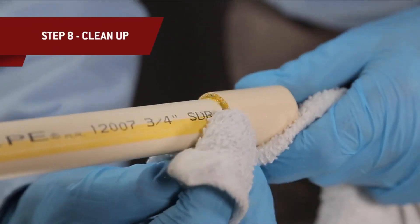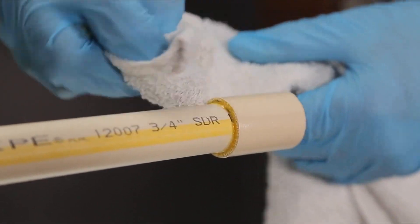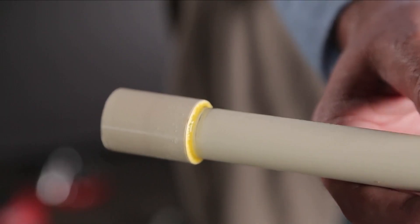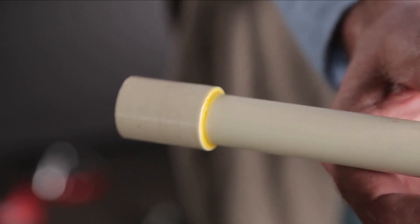Remove any excess cement with a rag. You want to see a continuous bead of cement around the joint. You've got a secure joint that will not leak and will perform for many years.